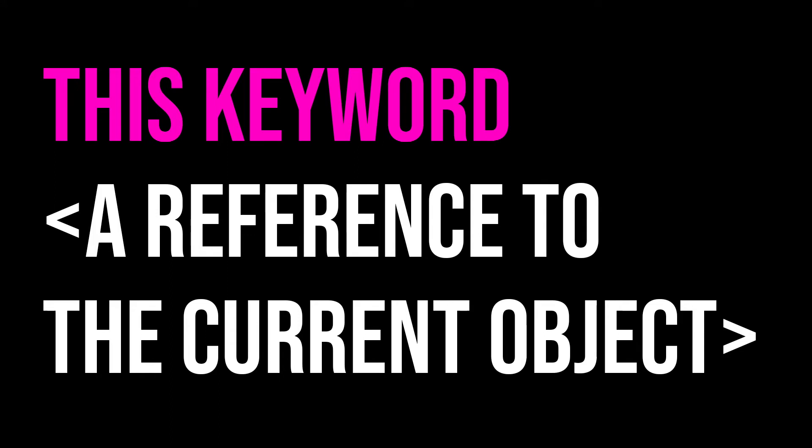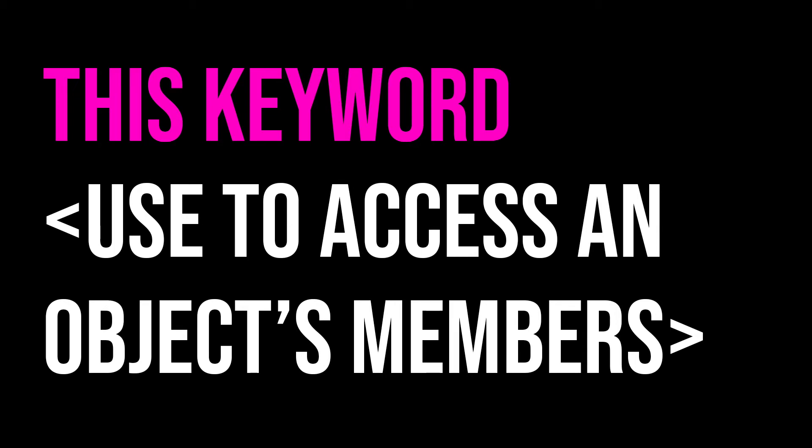Welcome back to my channel. My name is Katherine and in this video we're going to be talking about the `this` keyword in Java. You may have seen that `this` keyword in your code and been super confused — today we're going to clear up that confusion. `this` is a reference to the current object; using the `this` keyword you can access most members of the current object, including fields and methods.